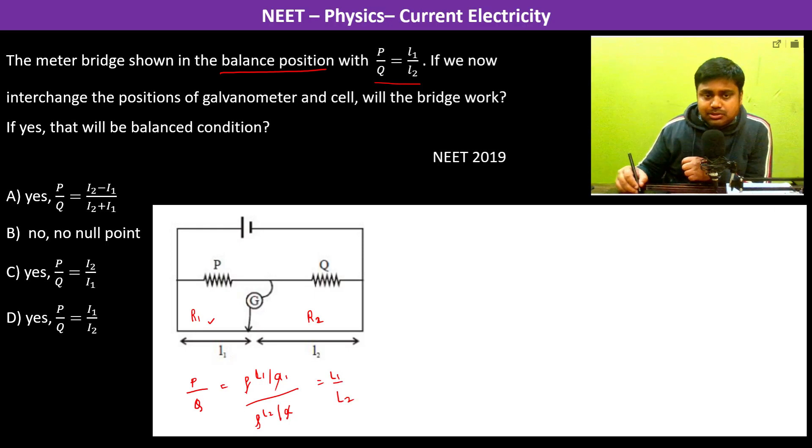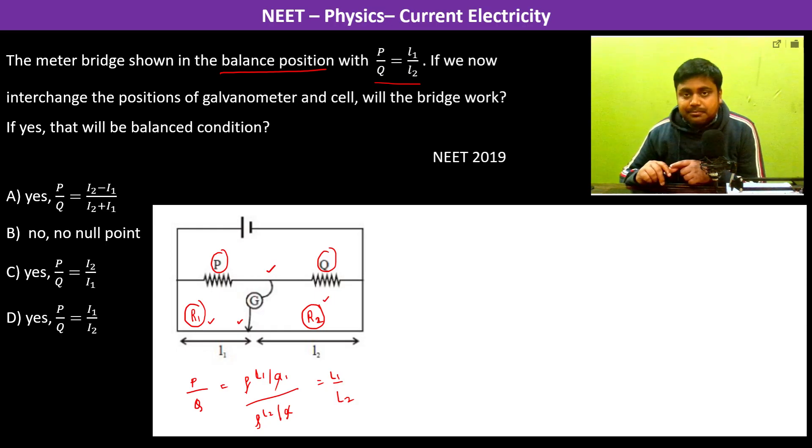This is a balanced position where the resistances are in the same ratio. When resistances are in the same ratio, the potential on both sides of the galvanometer is going to be the same and then the current to the galvanometer is going to be zero.